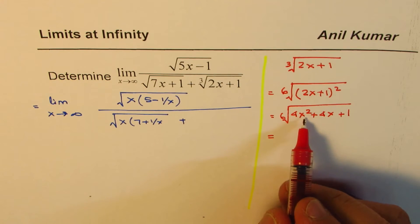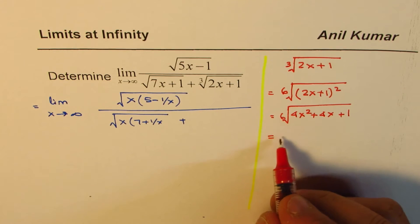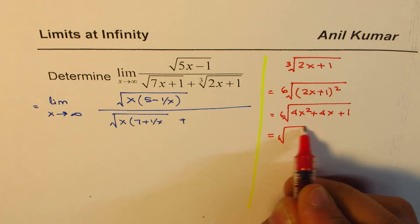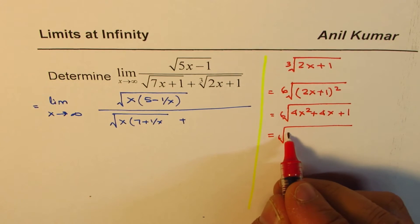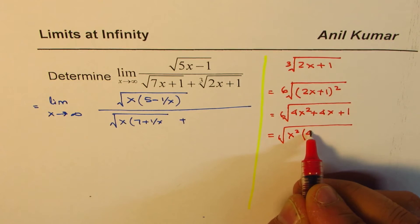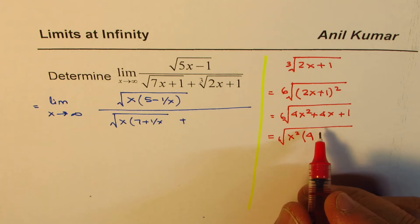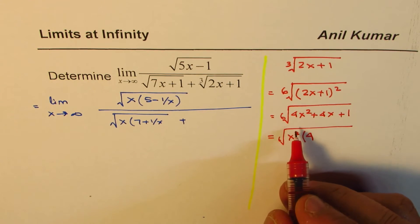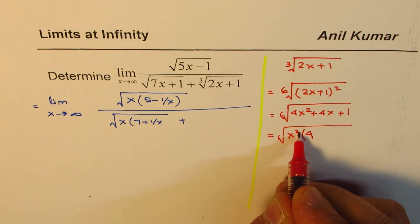Now, I could take x square common. So sixth root, and if I take x square common, I get 4. How about taking x cube common? Because I want square root. So I will take x cube common.